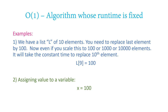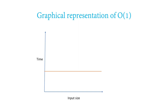Another example of O(1) is when you assign a value to a variable — that single statement always takes a fixed amount of time. Whether you increase or decrease the size of the input, it always takes a constant amount of time. This is called order of 1 or Big O of 1. If you see it graphically, on the x-axis we have input size and on the y-axis we have time. No matter how much you increase the input size, it takes constant time.